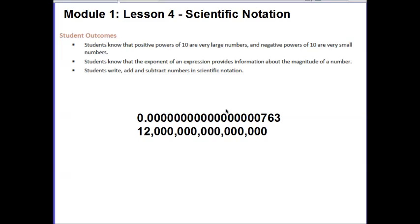Your outcomes for today's lesson are students know that positive powers of 10 are very large numbers and negative powers of 10 are very small numbers. Students know that the exponent of an expression provides information about the magnitude of a number. And students write, add, and subtract numbers in scientific notation. The first thing I'd like you to do is just below the outcomes on your notes sheet, I'd like you to pause the video for a moment, and I want you to copy down the two numbers that I have listed below. So go ahead and pause the video, and when you're ready to begin again, unpause it.